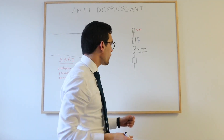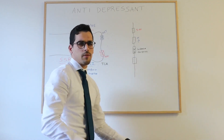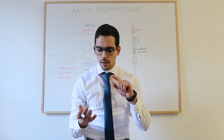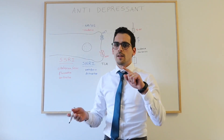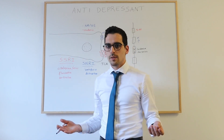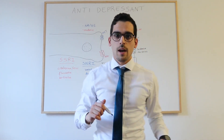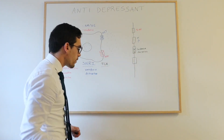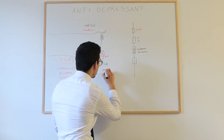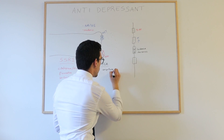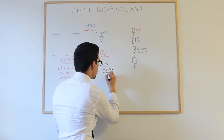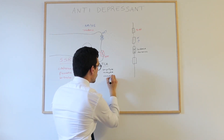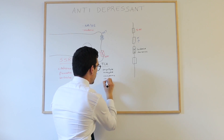Blocking histamine receptors causes sedation as an additional side effect. Blocking muscarinic receptors produces anticholinergic effects — patients may experience dry mouth, urinary retention, constipation, and depletion of secretions. Examples of tricyclic antidepressants include amitriptyline, nortriptyline, clomipramine, and imipramine.